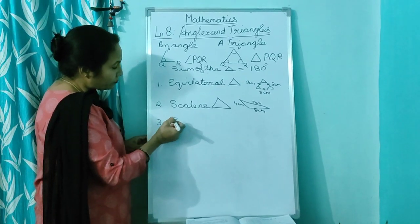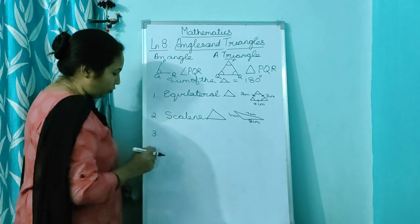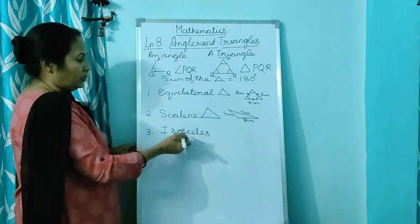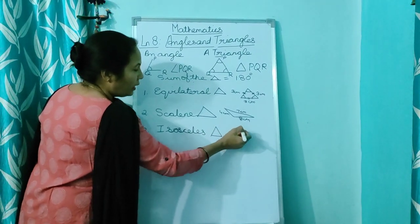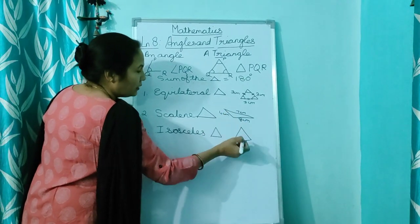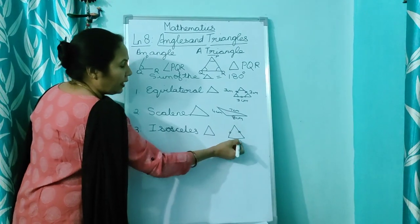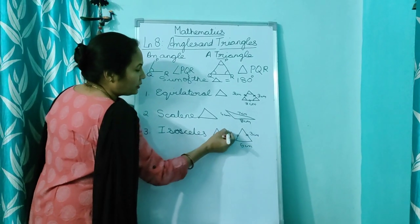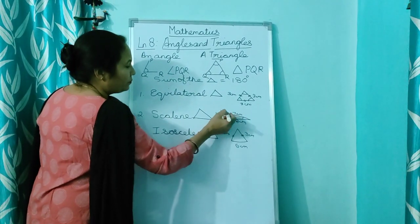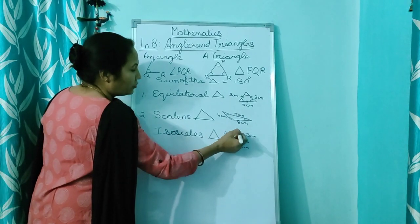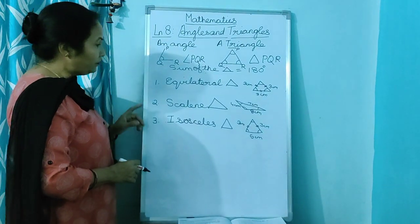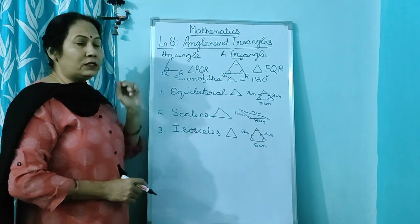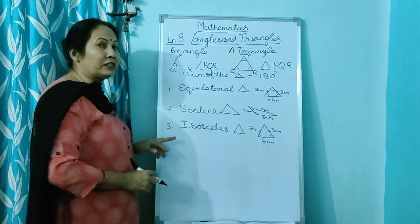Next is isosceles triangle. In isosceles triangle you have the opposite two sides equal. This can be 5 centimeters, and this can be 3 centimeters, and the opposite side will also be 3 centimeters. And remember, you can draw the angles also, because they are the vertex of the angle. So children, here you have the triangles which you read according to the sides: equilateral triangle, scalene triangle, and isosceles triangle.